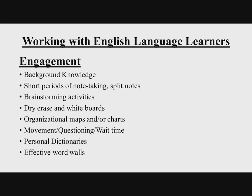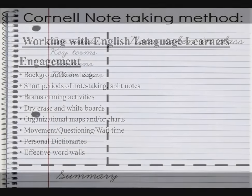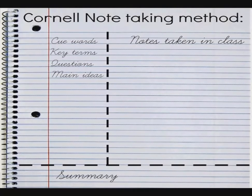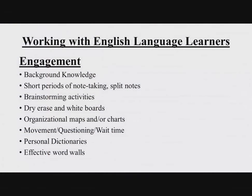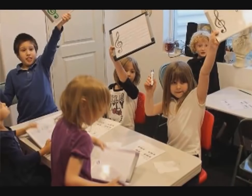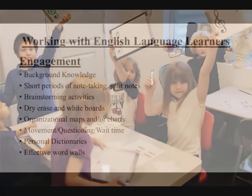Short periods of note-taking. Split notes — an example that comes to mind are Cornell notes. It's basically where the students split the page: on one side they write the classroom notes, and on the other side there's a space where they can have questions, classify, and reflect on the notes. We want to have brainstorming activities that allow for collaboration and peer-to-peer interaction. Using dry erase boards and whiteboards are an effective way of interacting with children throughout the lesson and keeping them engaged.